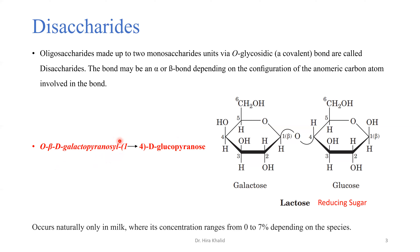We end with '-yl' — similar to naming alkyl groups like methyl or butyl — to indicate this is a prefix group hanging onto another parent group, with another part still to be defined. So we have 'O-beta-D-galactopyranosyl,' and then the arrow notation, e.g., 1→4, gives the direction of the O-glycosidic bond — between carbon one of galactose and carbon four of the other monosaccharide.